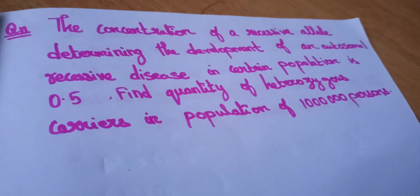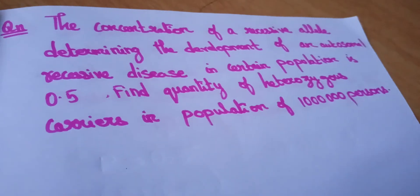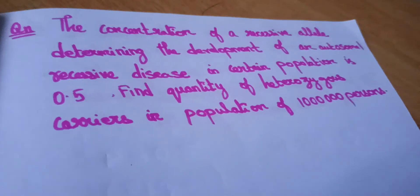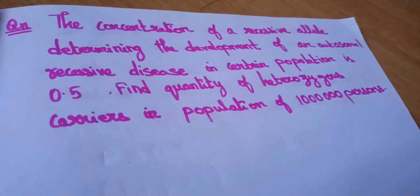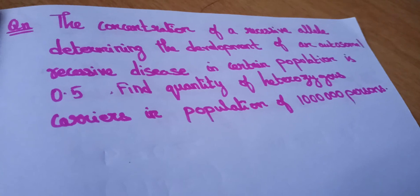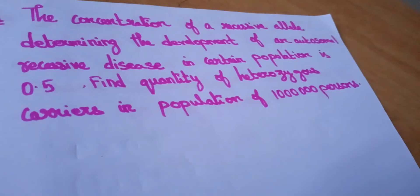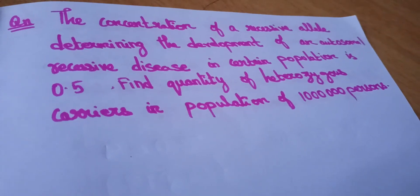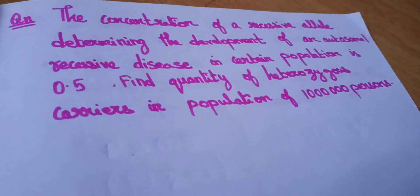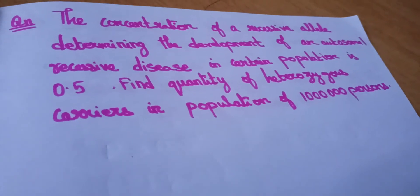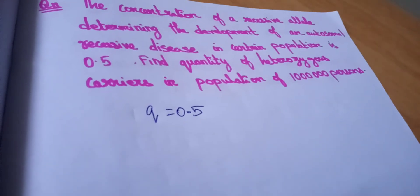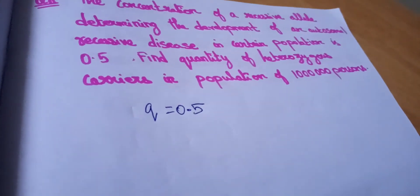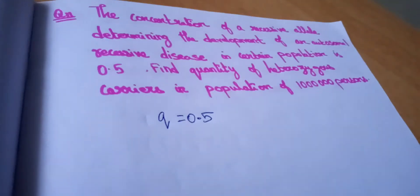The concentration of a recessive allele determining the development of an autosomal recessive disease in certain population is 0.5. Find quantity of heterozygous carriers in the population of 1 million persons. The given information is about the recessive allele, which is Q. Q is 0.5. We are asked to find heterozygous carriers, which is 2PQ. We will find P, then we will find 2PQ.